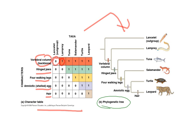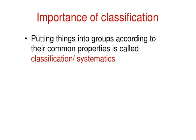Using the character table, you can draw a phylogenetic tree to understand evolutionary relationships between different organisms. For example, according to this phylogenetic tree, a leopard is a closer relative to a turtle than to a salamander. Classification is important because grouping things by common properties gives you knowledge about each organism.